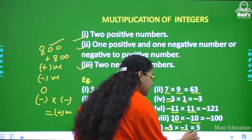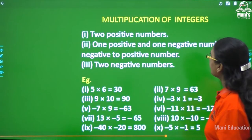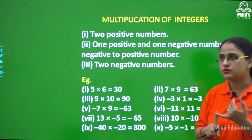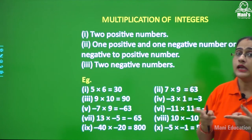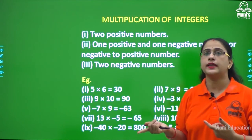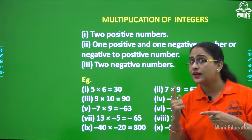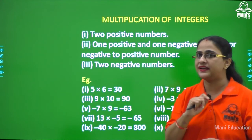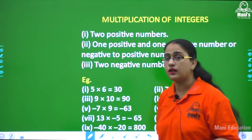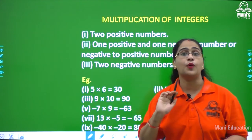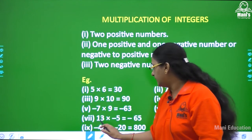Minus 5 multiplied by minus 1 gives plus 5. For multiplication, the first rule: two positive numbers — multiply and result is positive. Second: one positive and one negative — multiply the numbers and put a negative sign. For example, 13 into 5 gives 65, with one negative sign, result is minus 65. Similarly, 7 into 9 is 63; with one negative it is minus 63.